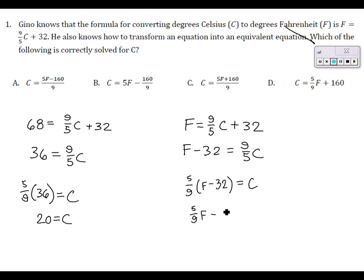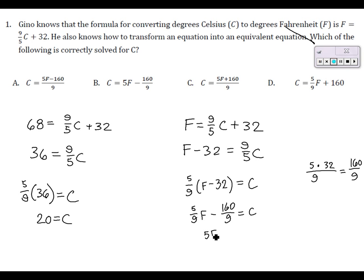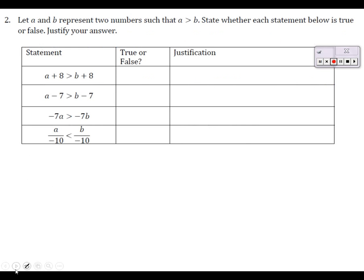We need to figure out what 32 times five-ninths is. It looks like it should be 160 over nine — yes, that's right. So the answer can be written as five f minus 160 over nine, which does appear in the answer choices. Now to Miss Engelman for the second one.